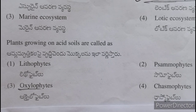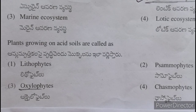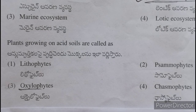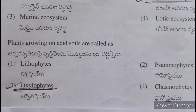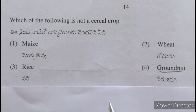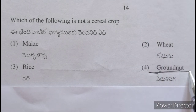Plants growing on acid soils are called oxilophytes — amla brittikalapai vriddhi chendu mokalanu oxilophytes antaru. Which of the following is not a cereal crop? The answer is groundnut — dhaniyamu kaanidhi groundnut.